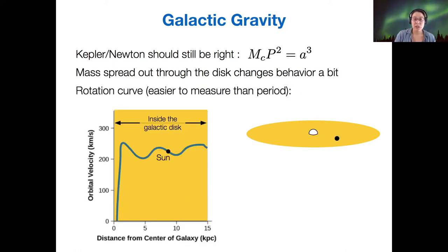So the rotation curve for our galaxy is shown here out to 15 kiloparsecs. So again, we're looking at the orbital velocity in kilometers per second on the y-axis and the distance from the center of the galaxy in kiloparsecs on the x-axis.